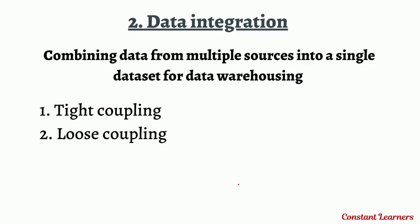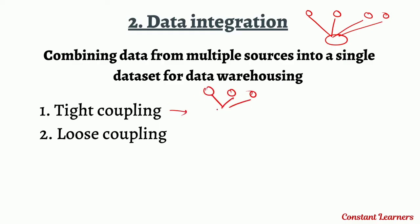The next process is data integration. Data integration means collecting data from multiple sources and integrating it into a single data set for data warehousing. There are two ways: tight coupling and loose coupling. In tight coupling, data is collected from multiple sources and stored at one particular location, and whenever the user queries the data, the answer is given from that location.